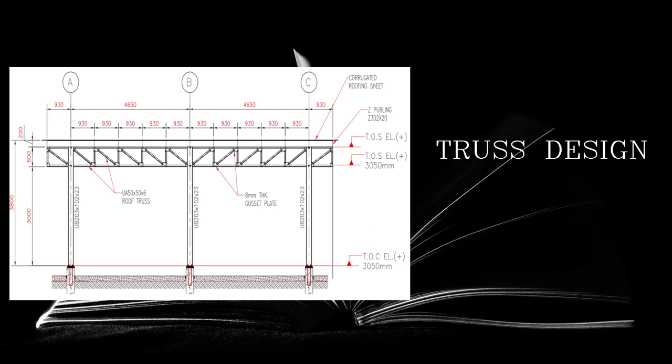Trusses are a structural system majorly used as a roofing system in day-to-day activity. You can have a wooden truss — that is the most common — or you can have a steel truss. Steel trusses are usually common when you have a long span of roof where you need a wider space, and you need a steel truss to take up the roofing load.